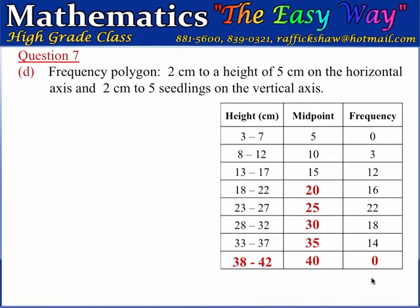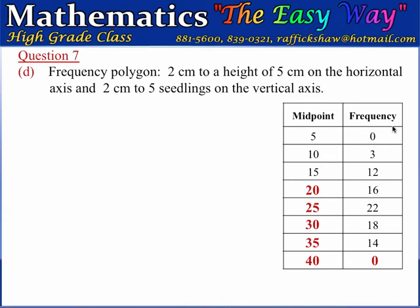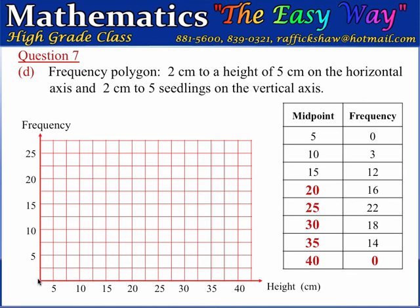Part D wants us to draw a frequency polygon for this frequency distribution, using a scale of 2 cm to 5 cm of height on the horizontal axis, and 2 cm to 5 seedlings on the vertical axis. A frequency polygon is a line graph obtained by plotting midpoint values against frequency values — midpoint values go on the horizontal axis and frequency values on the vertical axis.